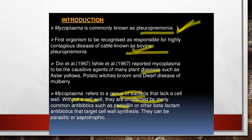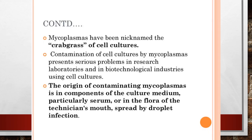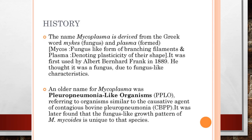Mycoplasma refers to a genus of bacteria that lacks a cell wall. Because it has no cell wall, it is unaffected by many common antibiotics such as penicillin or other beta-lactam antibiotics, which target cell wall synthesis. Mycoplasma can be parasitic or saprophytic in nature. They are also called the 'crabgrass of cell cultures' because they contaminate cell cultures and cause various problems in research laboratories and biotechnological industries.